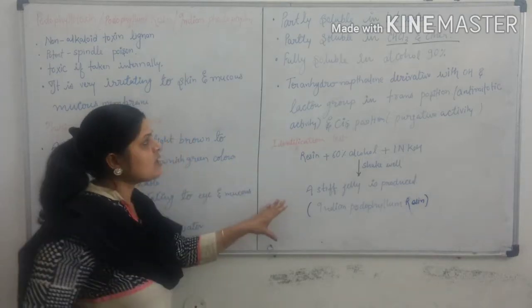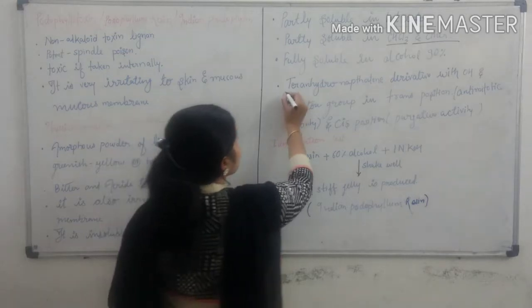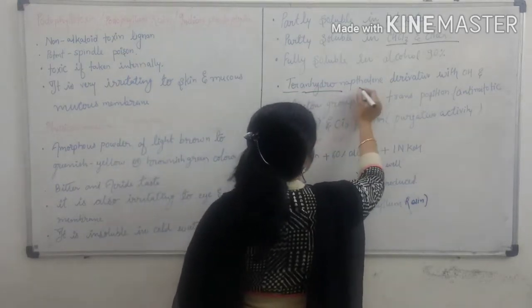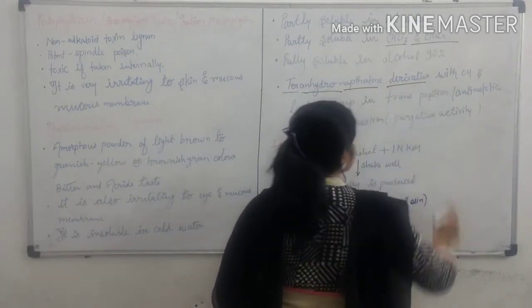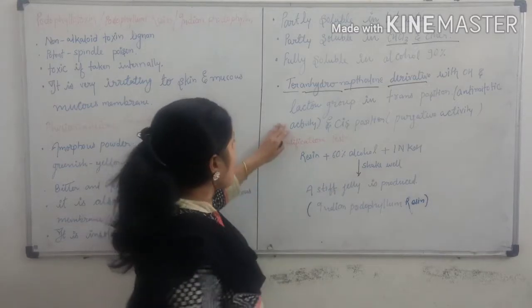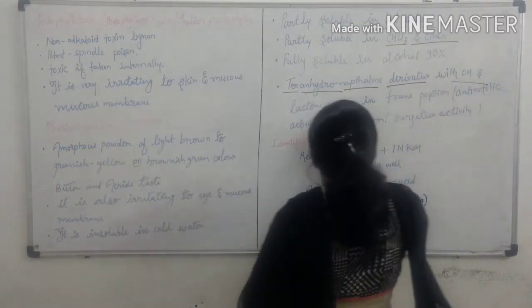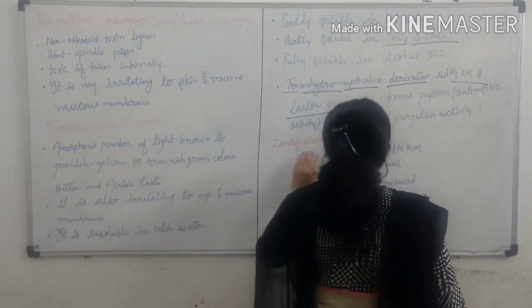Podophyllotoxin is a tetrahydronaphthalene derivative with a hydroxy and lactone group, where the lactone group is present.